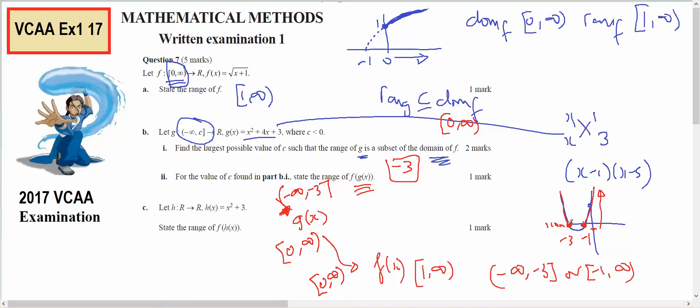The smallest number coming out of here will be 0, and when I put a 0 in there, I get 1. Then I'll have bigger numbers coming out, and as I put bigger numbers in here, it's going to get bigger and bigger. So 1 to infinity will be the answer for part B.